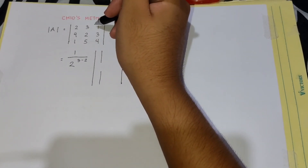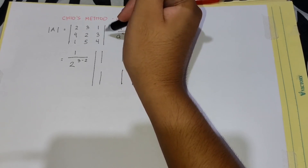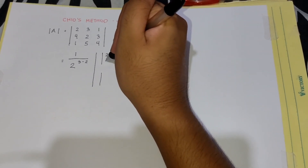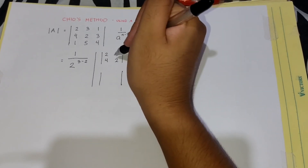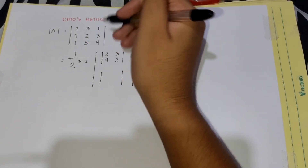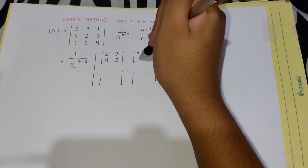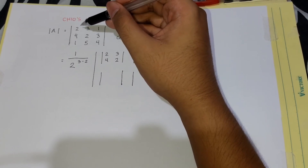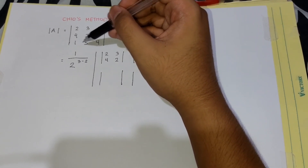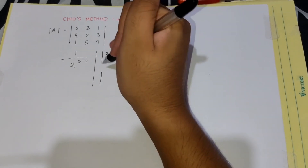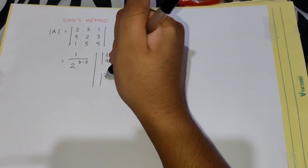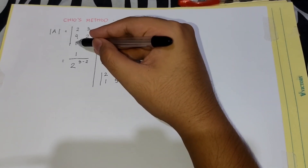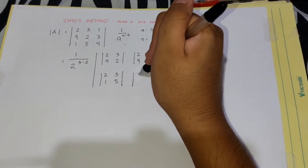For the first two matrices, use the first row and second row of the 3 by 3 matrix. The first 2 by 2 is: 2, 3, 4, 2. The second is: 2, 1, 4, 3. For the remaining two matrices, use the first row and last row. The third is: 2, 3, 1, 5. The fourth is: 2, 1, 1, 4.